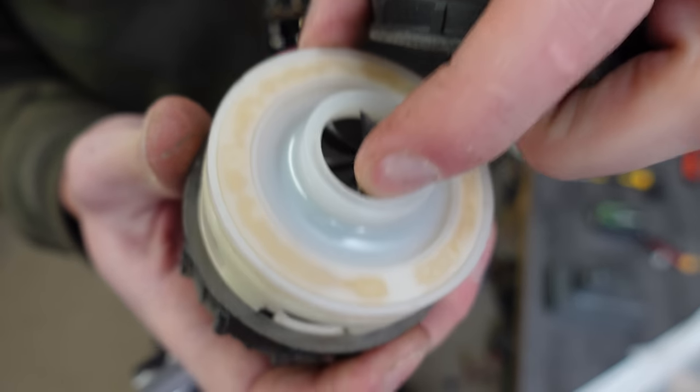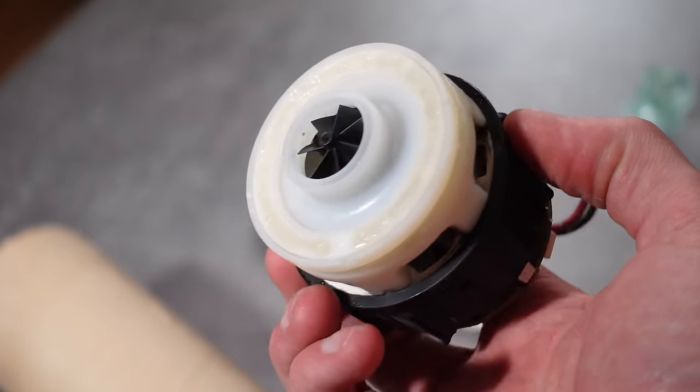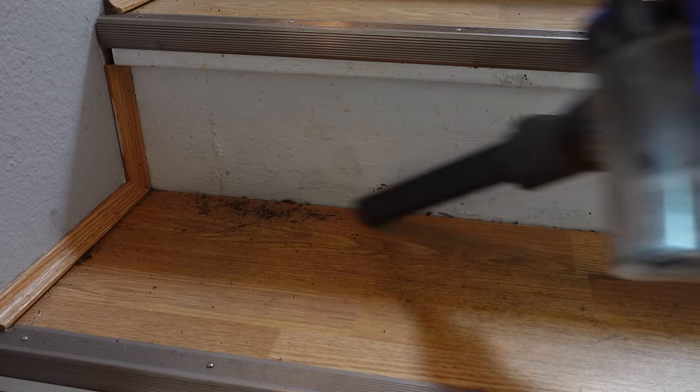These Dyson handheld vacuum motors are pretty cool. They make a ton of suction for how small they are. And when built into a vacuum, they are remarkably quiet.